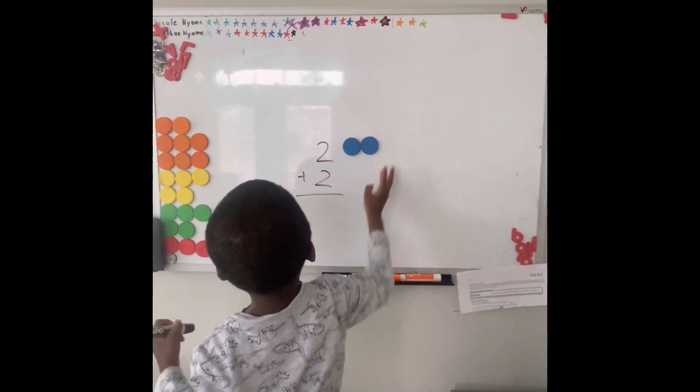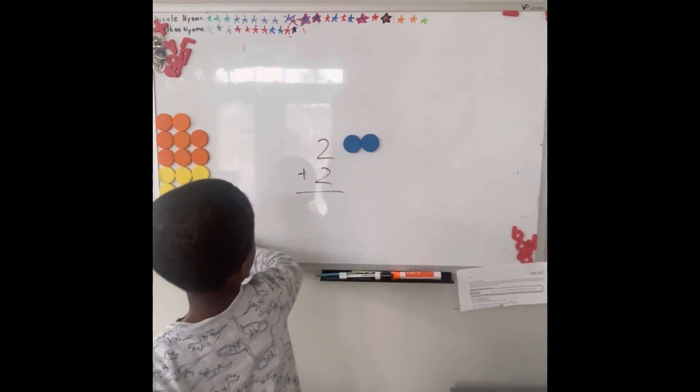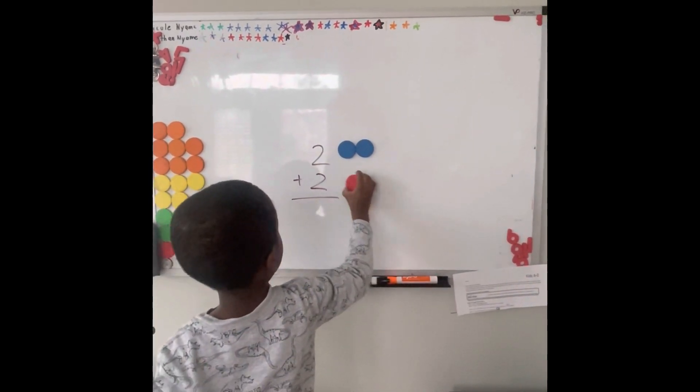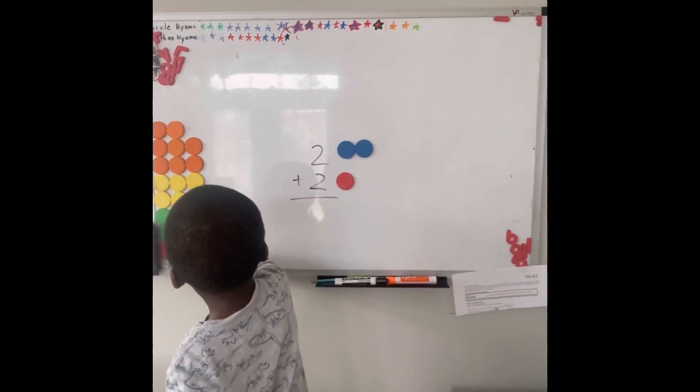Perfect. So in this exercise he reaches for two objects to correspond with the first two, then he uses a different color to show that it's the second group of two.